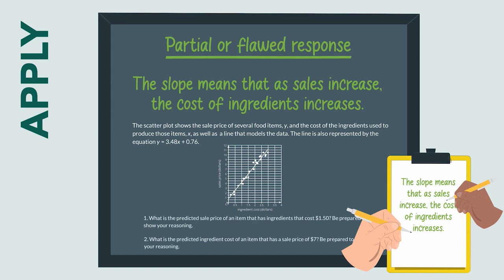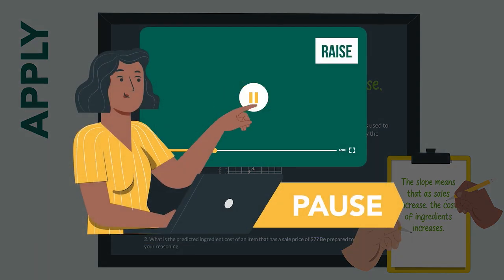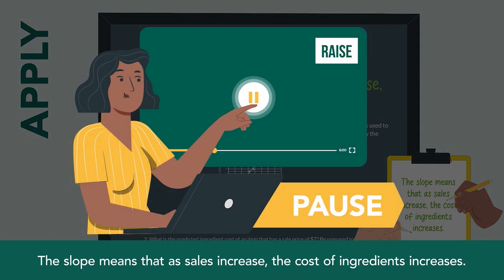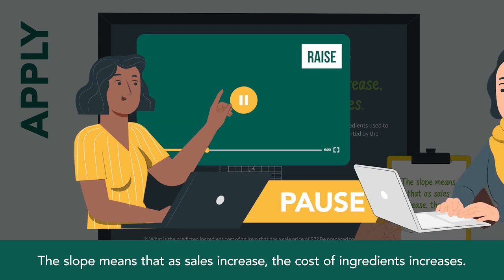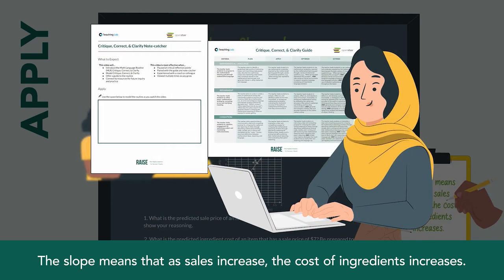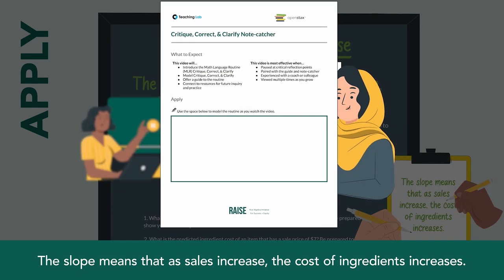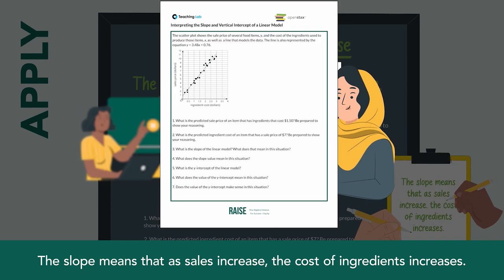You just saw a teacher model both step one, present, and step two, prompt, of Critique, Correct, and Clarify. Now pause the video and think about the statement: The slope means that as sales increase, the cost of ingredients increases. Write any inaccuracies that are top of mind on your personal note catcher during this time.